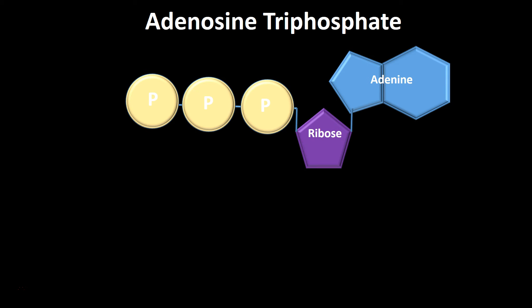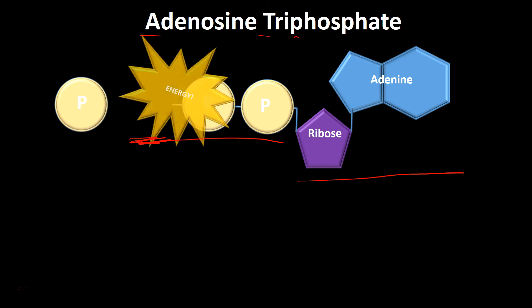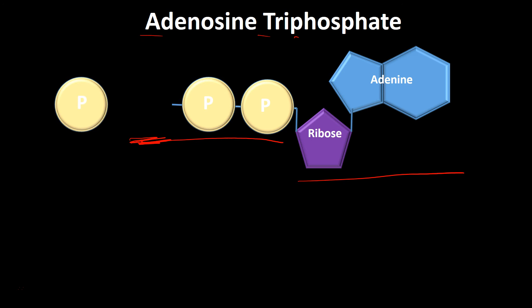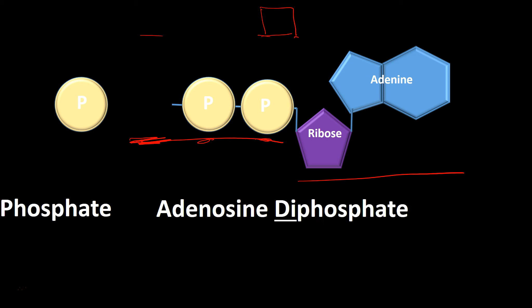Here's what this looks like: we have our adenosine and our triphosphate — that's where we get ATP. This third phosphate has a high amount of energy stored in it. That third phosphate is going to break off, and that energy is released. Our cells use that energy, but now we're not left with ATP anymore — because 'tri' means three, and we only have two phosphates attached now. So we call this molecule ADP, adenosine diphosphate, and we're also left with a free phosphate group.